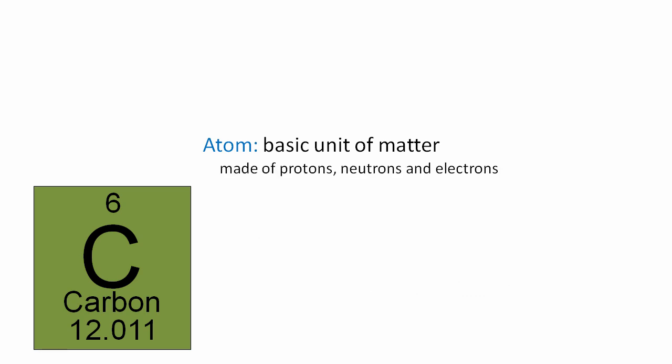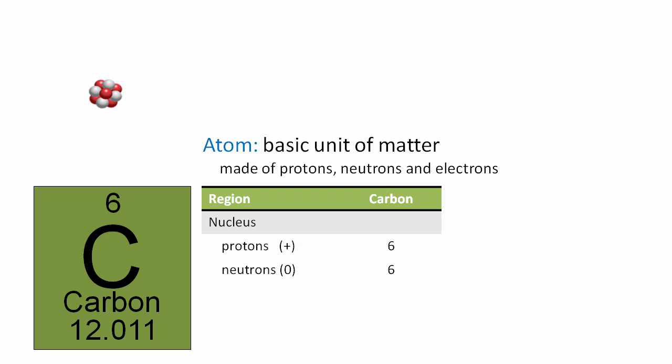Let's begin by looking at the different regions of an atom. In the middle portion is a dense region called the nucleus, and in the nucleus you will find protons with a positive charge, and neutrons with a neutral or no charge at all. Carbon, specifically, has six protons and six neutrons.